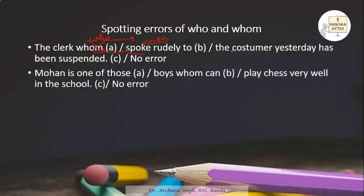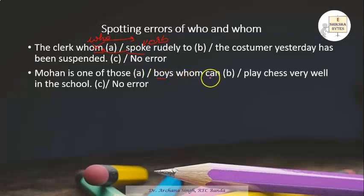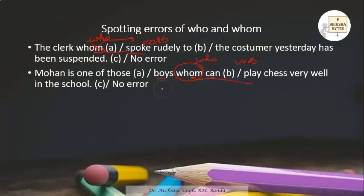'Mohan is one of those boys who can play chess very well in the school.' Here, 'can play' is the verb. Since a verb is always followed by 'who' and not 'whom,' the correct answer is 'who.' So the sentence is correct: 'Mohan is one of those boys who can play chess very well in the school.'